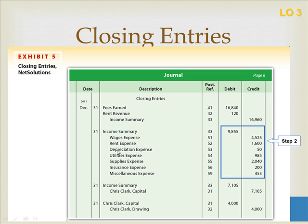The second step is to close all expense accounts. Please note that we're listing all expenses individually, not one lump sum — if you give a lump sum that will be incorrect because your ledgers will be incorrect. We list every expense out individually. We debit income summary for the total amount of all expenses, and then credit each expense account for its individual amount. You can verify this on the income statement. Once these entries are posted, revenue and expense accounts have zero balances, and income summary has a credit of $16,960 and a debit of $9,855.